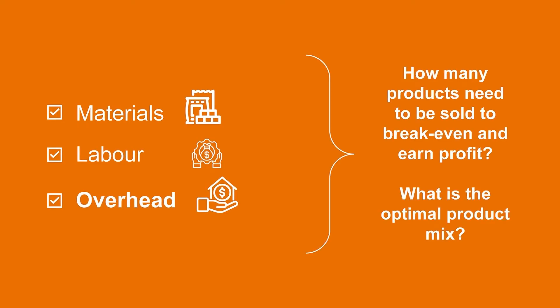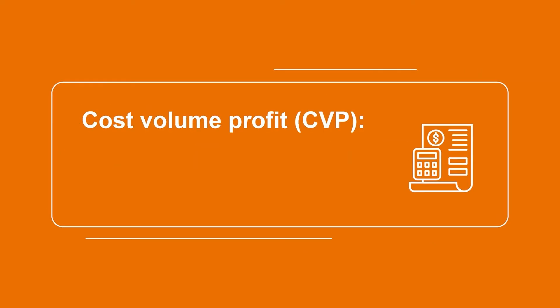Imagine you were managing a company that manufactured and sold a variety of products. Every month you would have all kinds of expenses in order to make these products, such as materials, labor, and overhead. Wouldn't it be useful to understand how many products you would need to sell each month in order to cover all these costs? This would help you understand how many units you need to produce and sell in order to break even before you start earning profit. You might also be looking to understand the optimal product mix so that you can focus on producing and selling the products that are most profitable. Management accounting tools such as cost-volume-profit can help managers make better business decisions.